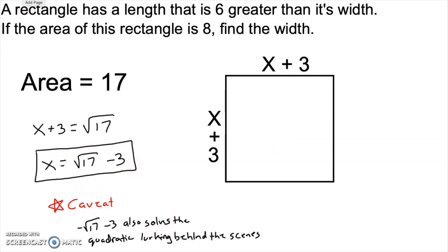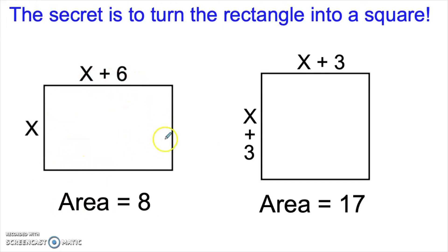Now think about how amazing that is. We just solved this problem with no classic algebra. We never wrote down a quadratic. We did not factor anything. We certainly didn't employ anything as esoteric as the quadratic formula. And yet, simply by turning this rectangle into a square — which we were able to do by adding in this missing piece that had an extra 9 area — we were able to turn this into a much simpler problem to solve. That's the beauty of completing the square. It's a simple geometric story about rearranging the pieces of a rectangle until they become a square.